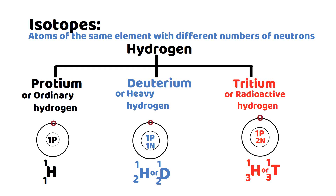By looking at these three isotopes of hydrogen, we can say isotopes of an element have the same atomic number due to the same number of protons. All three isotopes of hydrogen have one proton in the nucleus. Also, isotopes have different atomic masses due to different numbers of neutrons — protium has no neutron, deuterium has one neutron, and tritium has two neutrons. If isotopes are neutral, they have the same number of electrons and same electronic configuration; all three isotopes of hydrogen have one electron in their valence shells.